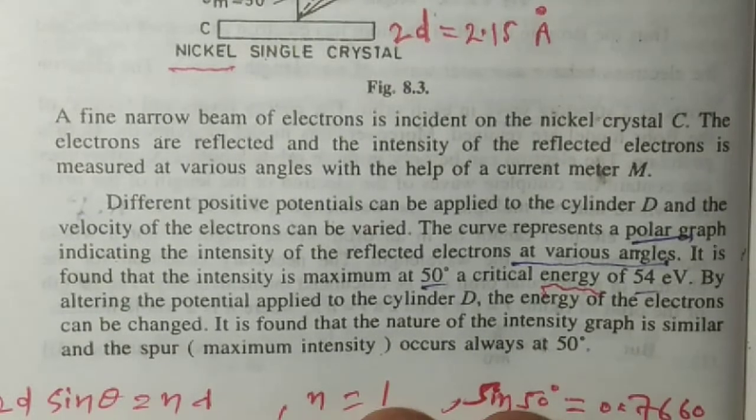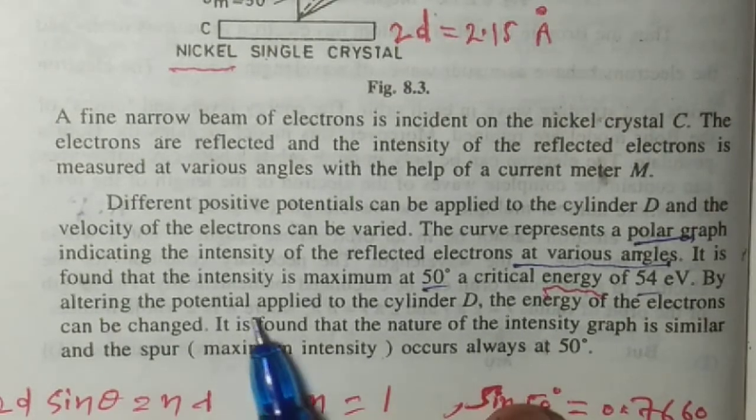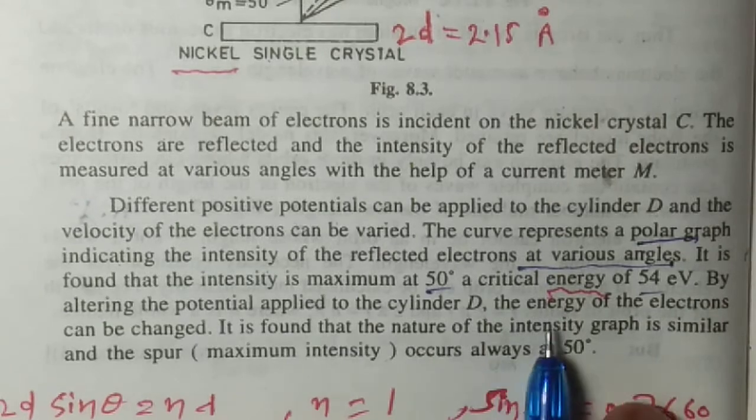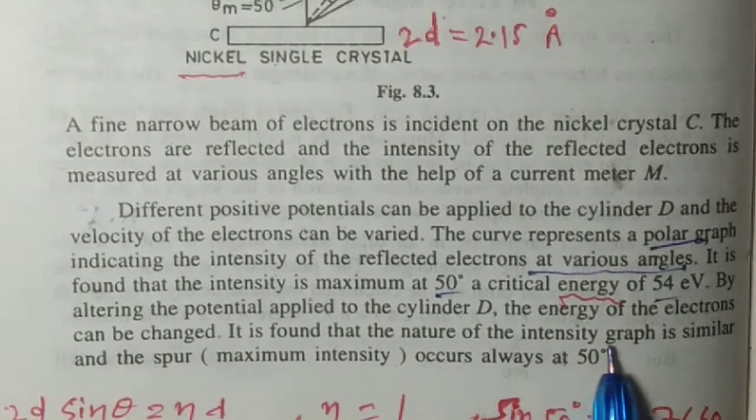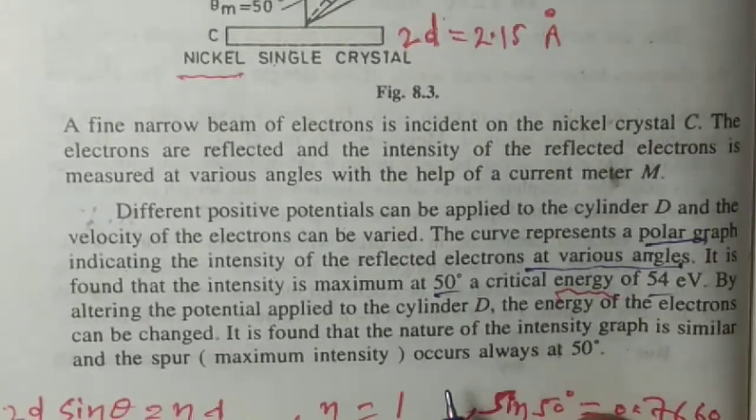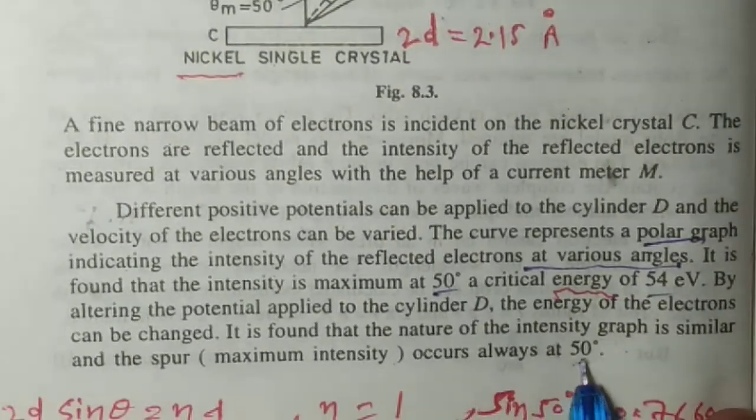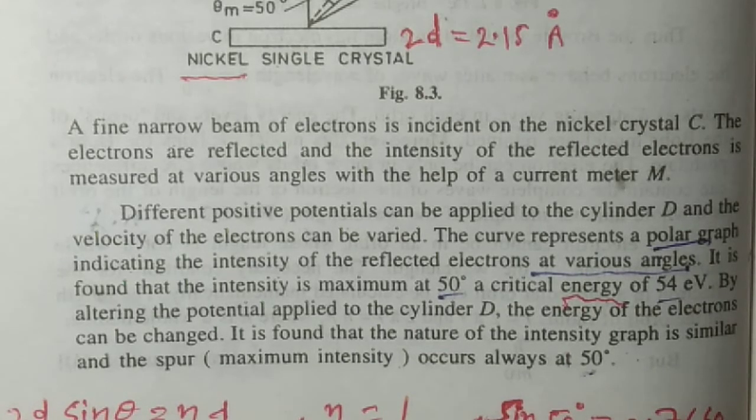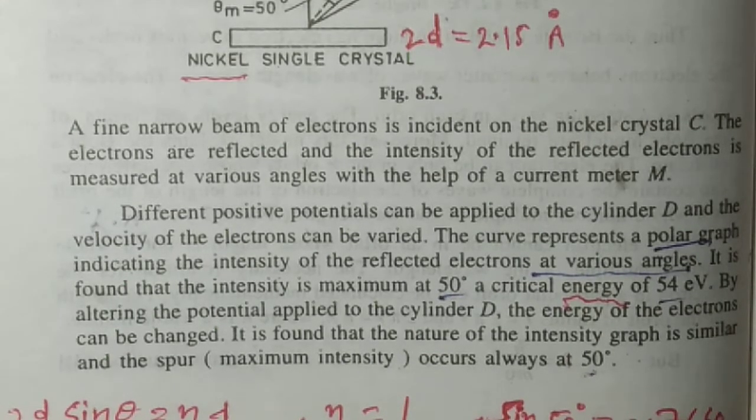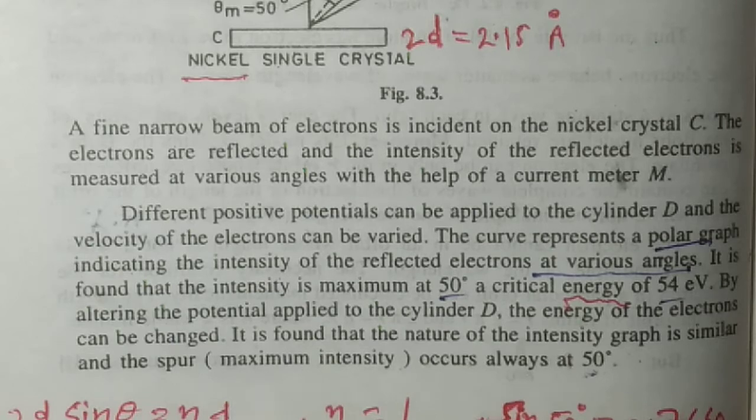It is found that the intensity is maximum at 50 degrees at a critical energy of 54 electron volts. By altering the potential applied to cylinder D, the energy of the electrons can be changed, and it was found that the nature of the intensity graph is similar and occurs at 50 degrees.